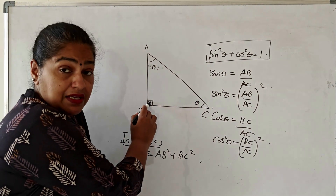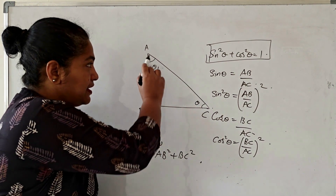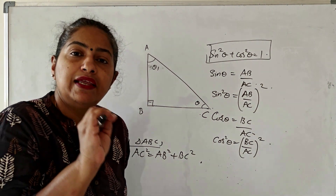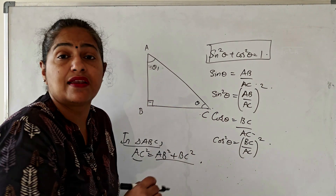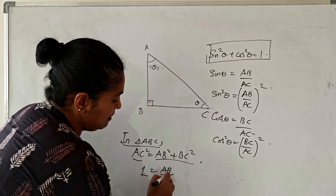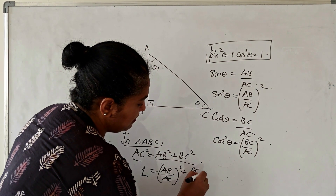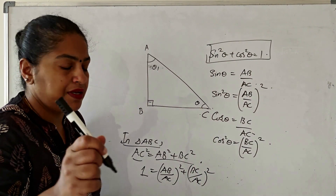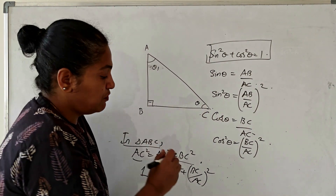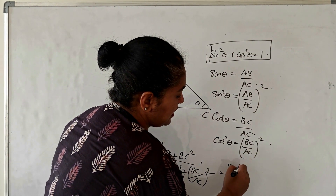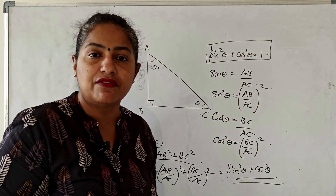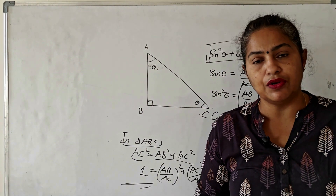For this triangle, right-angled at B, hypotenuse squared equals base squared plus altitude squared. Now I divide the entire LHS and RHS by AC². I get 1 = (AB/AC)² + (BC/AC)². Now AB/AC is sin θ, so (AB/AC)² is sin²θ, and the second term is cos²θ. Thus we have proved that sin²θ + cos²θ = 1.